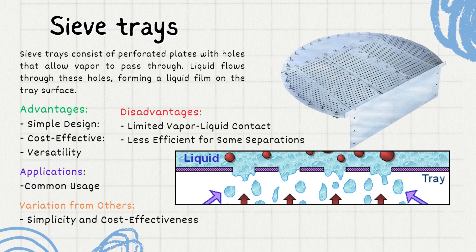The advantages of sieve trays are: first, simple design — sieve trays are known for their straightforward and uncomplicated design. Second, cost effective — they are cost effective to manufacture and install. Third, versatility — they are suitable for various applications due to their simplicity. The disadvantages include limited vapor-liquid contact, as sieve trays offer less vapor-liquid contact compared to other trays due to a lack of residence time, and less efficiency for some separations due to that limited contact.